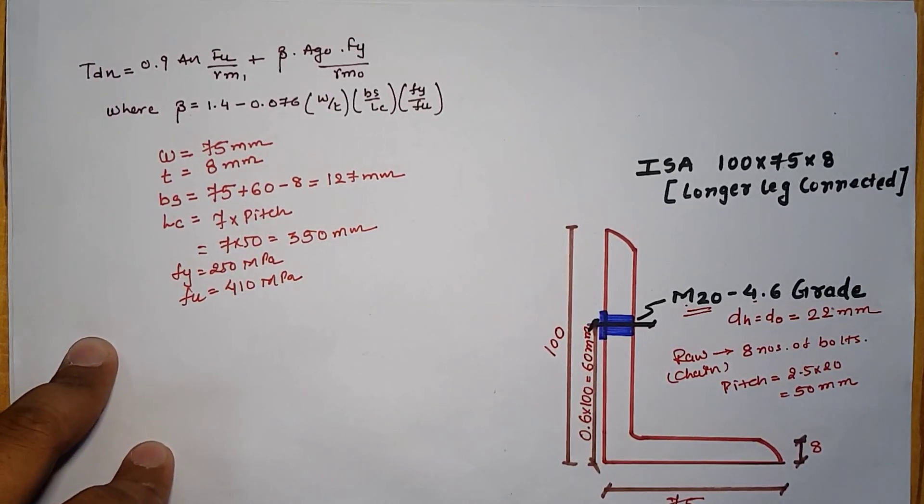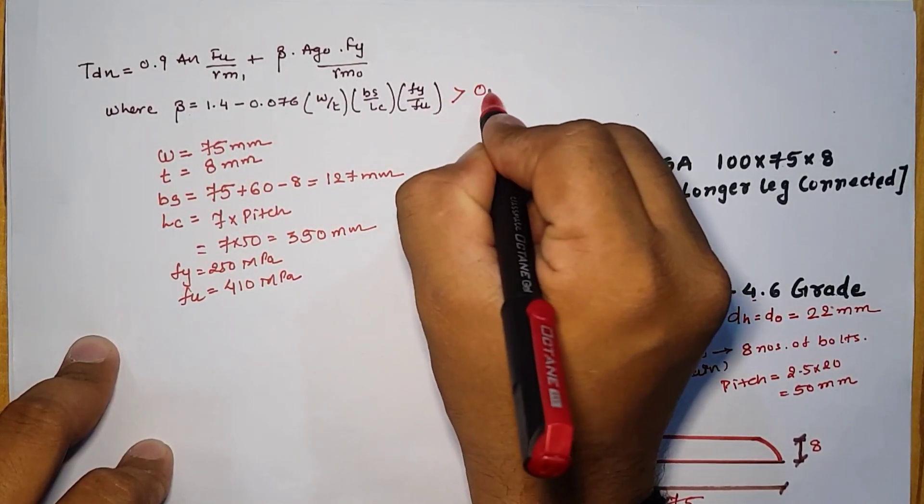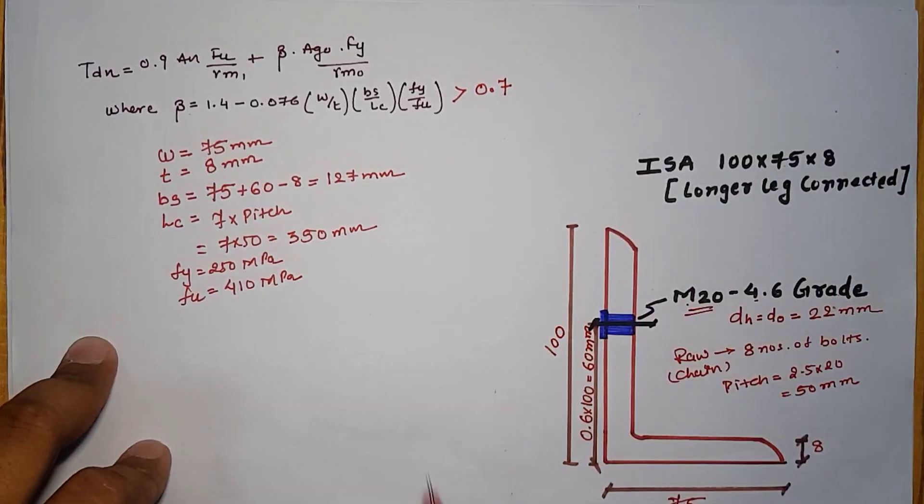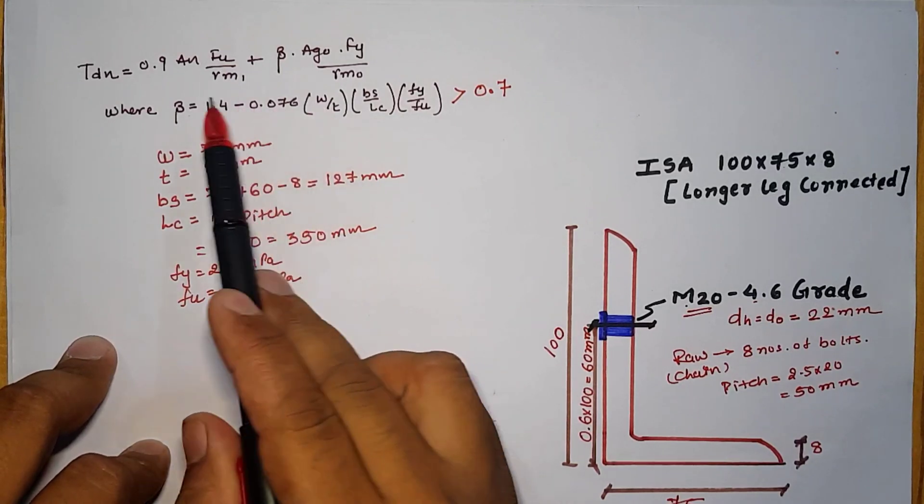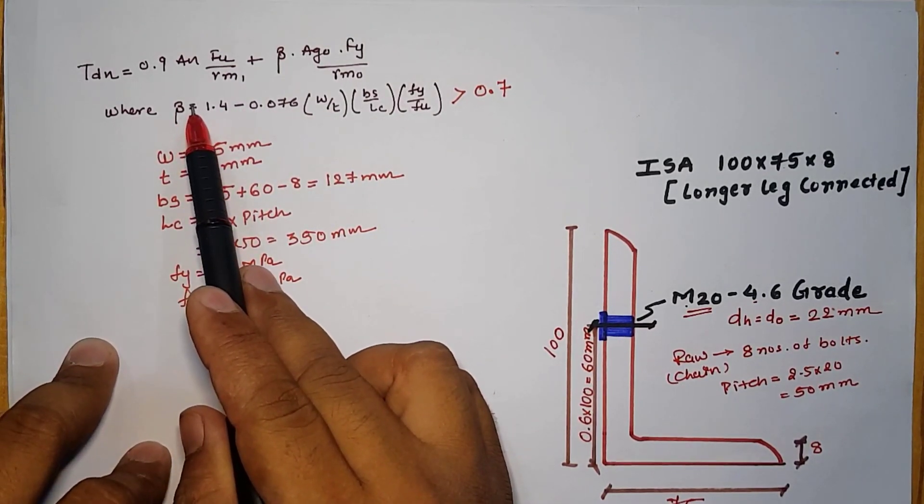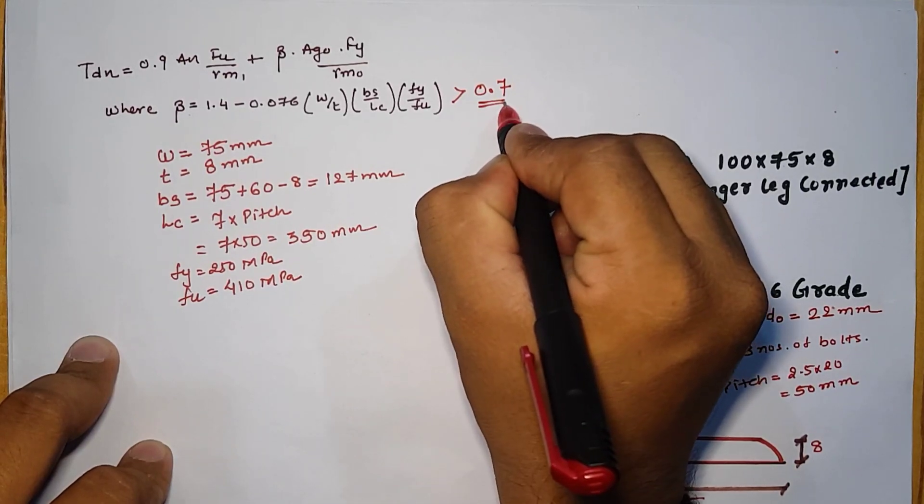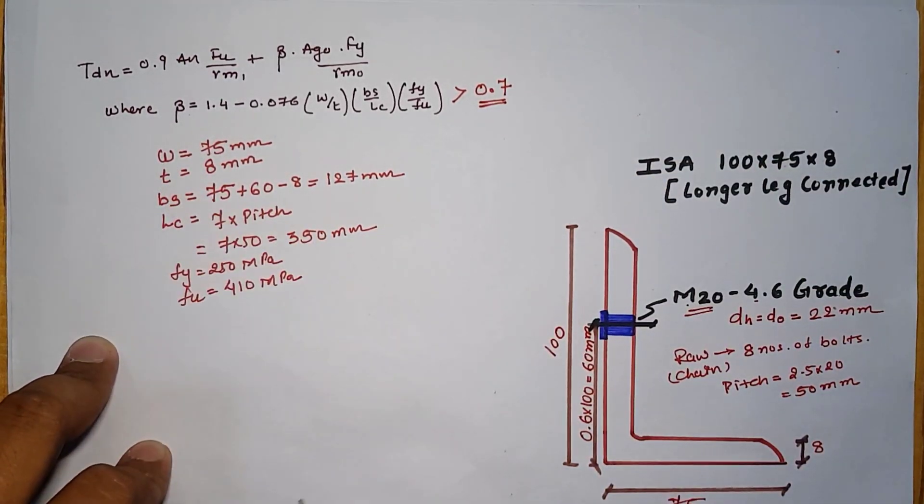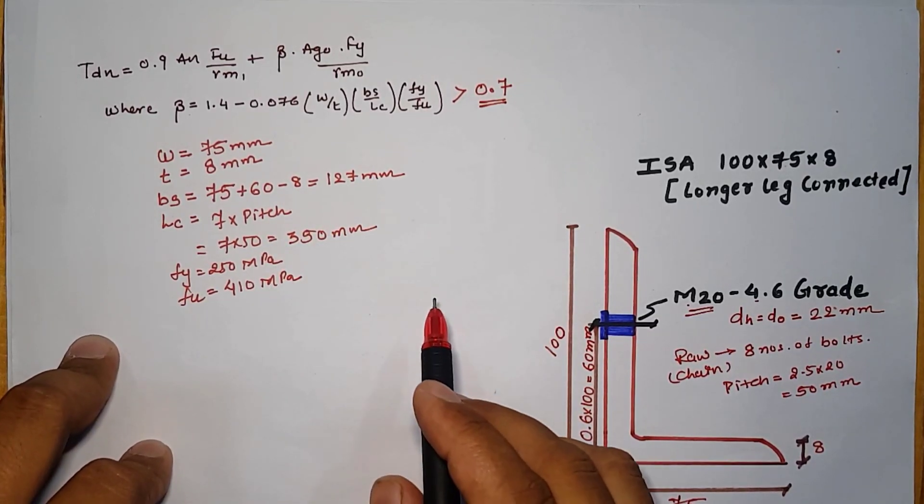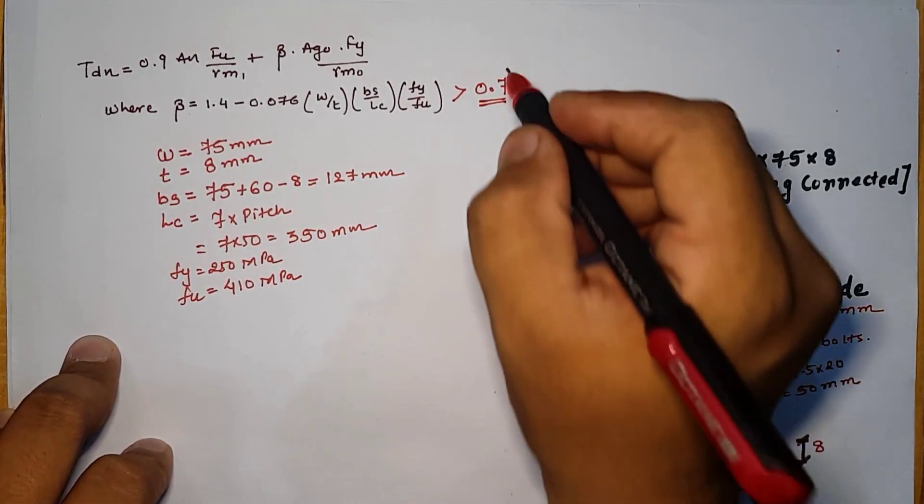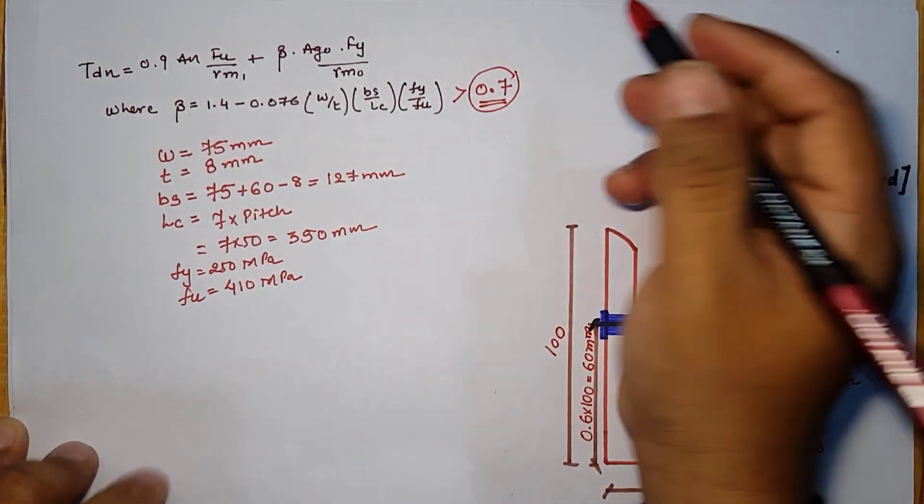According to the clause, these terms must be greater than 0.7. After putting all the value in the terms beta, if our beta value is 0.6 then we have to use 0.7 but if our beta equation is equal to 0.84 then we have to use the beta as 0.84. It means that the minimum value of beta must be 0.7.